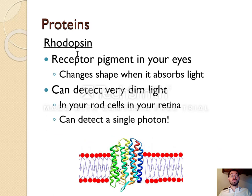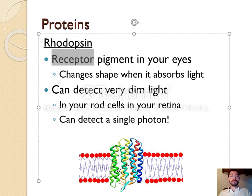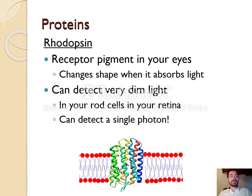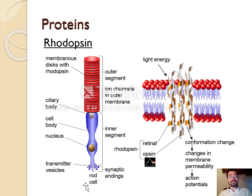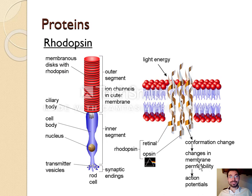Next, rhodopsin. Rhodopsin is a receptor protein — it actually detects light. Literally, you are using rhodopsin right now to watch this video. Rhodopsin is an integral protein inside the cell membrane, and it actually changes shape when photons of light hit it. Here is a cell that detects light, and in the outer segment of the cell you have rhodopsin, which detects light energy, changing its shape and telling your cells — which then tells your brain — that you're seeing things. Rhodopsin is the receptor that helps you see.